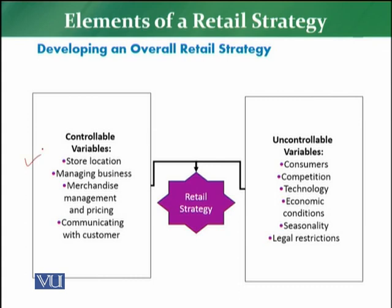To koun koun se aise variables hain jo controllable hain — pehle hum us ke upar ek light dalte hain. Sabse pehla variable jo controllable hai, that is the store location — it is up to the retailer ke woh koun location ko choose karta hai. Phir managing business, merchandise management, and pricing — to business ko kaise manage karna hai, merchandise ko kaise manage karna hai, pricing ko kaise manage karna hai — yeh bhi controllable hai. Communication kya karni hai customer ke saath — it is also a controllable variable in defining the overall retail strategy.